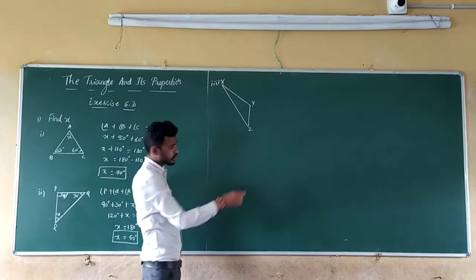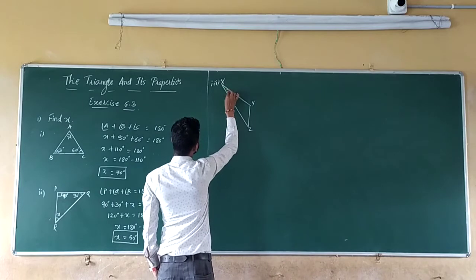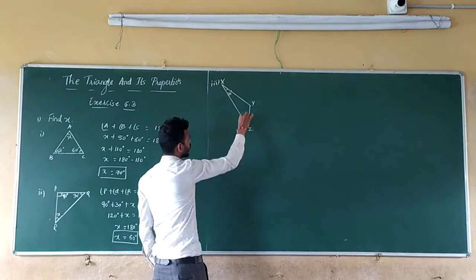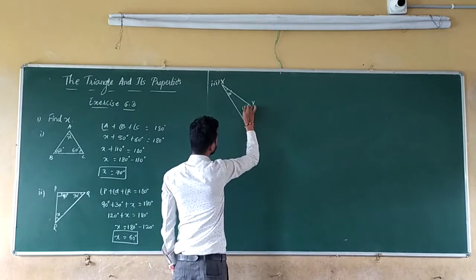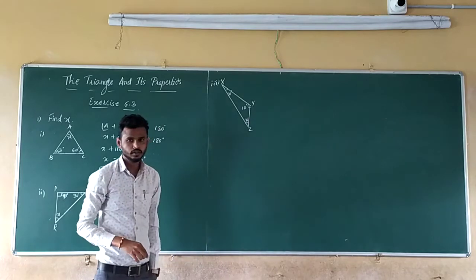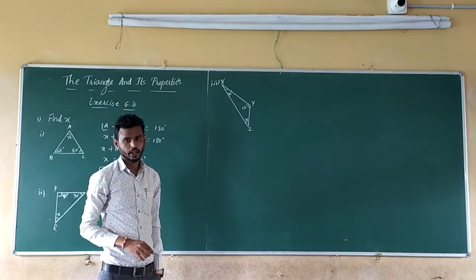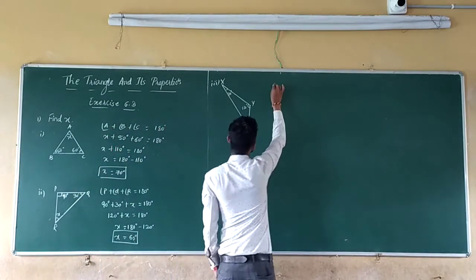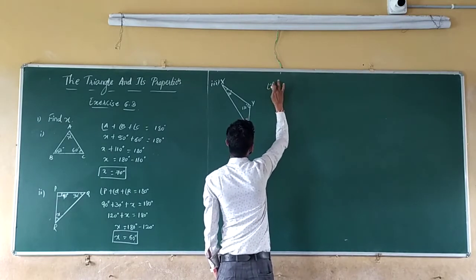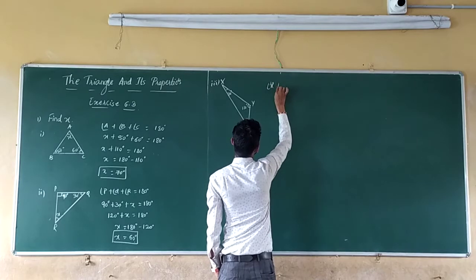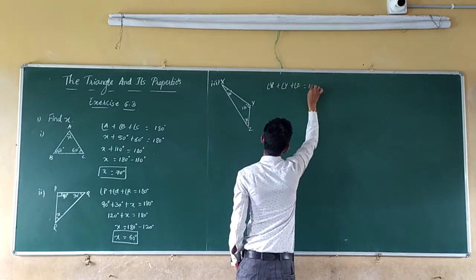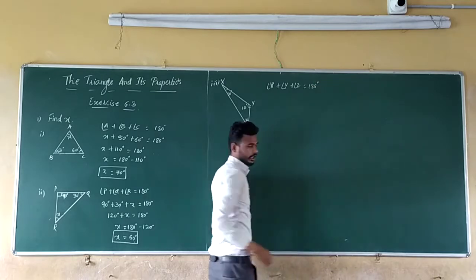Angle X is 30 degrees, Y is 110 degrees, and Z is X. So use the angle sum property of a triangle. What you can write: Angle X plus angle Y plus angle Z, which is equal to 180 degrees.